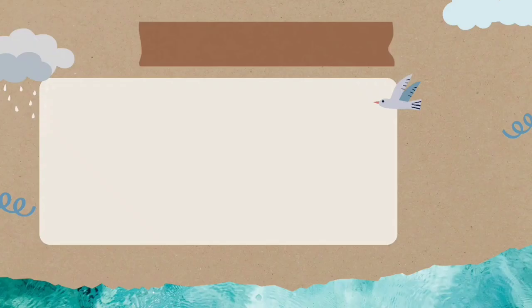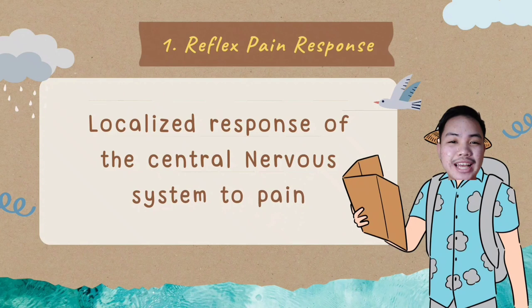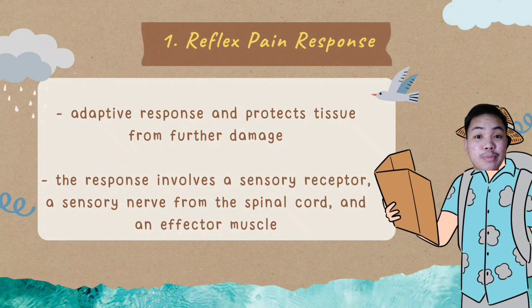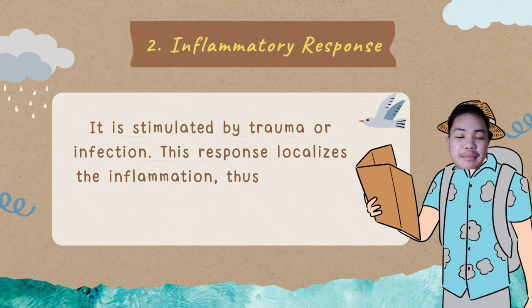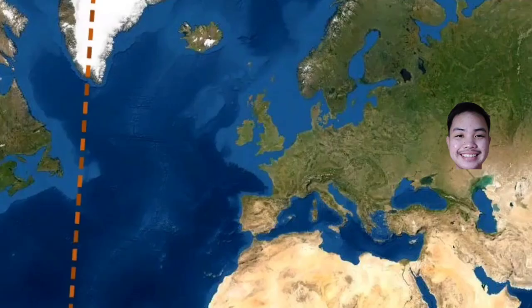Third stop: two localized responses of stress. First, the reflex pain response. It is a localized response of the central nervous system to pain and is an adaptive response that protects tissue from further damage. The response involves a sensory receptor, a sensory nerve from the spinal cord, and an effector muscle. Second is the inflammatory response. It is stimulated by trauma or infection. This response localizes the inflammation, thus preventing its spread and promoting healing.